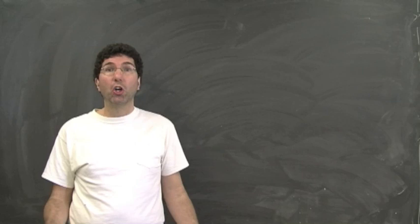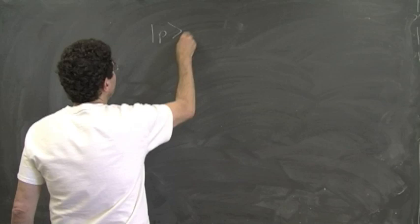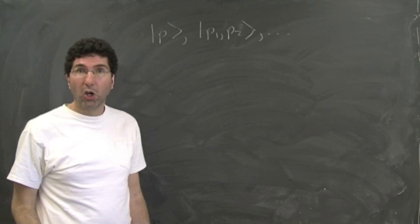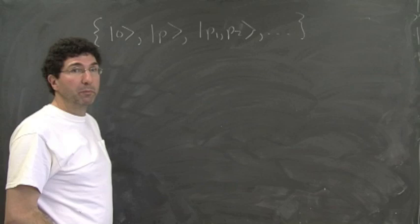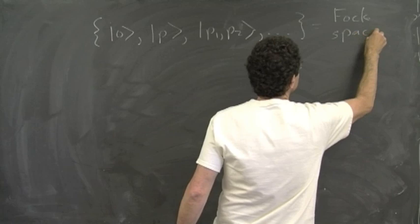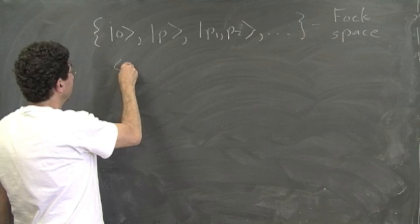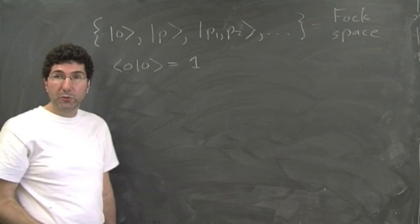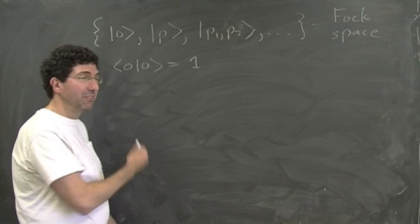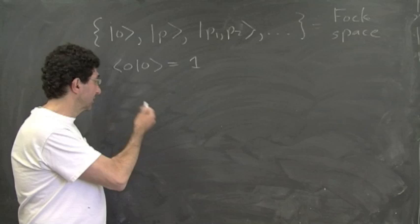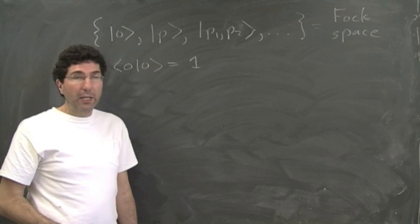It's useful to define a bigger space that includes all states with any number of particles — one-particle states, two-particle states, three-particle states, and so on — all in one big space that we call Fock space. We also include the no-particle state, denoted |0⟩, which is normalized to one and orthogonal to all the other states. This will eventually turn out to be the ground state of quantum field theory — the vacuum state — but for now it just represents the state with no particles.